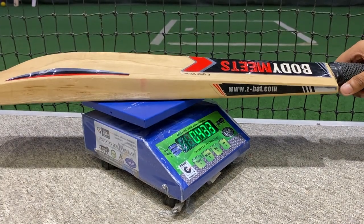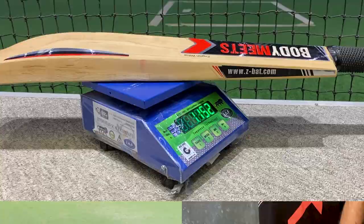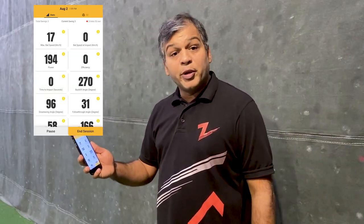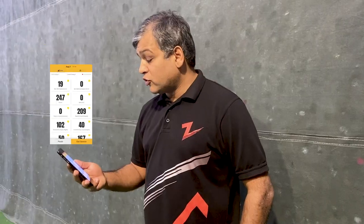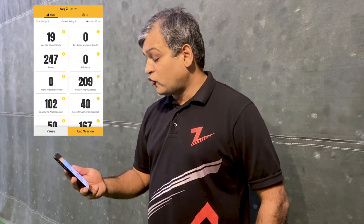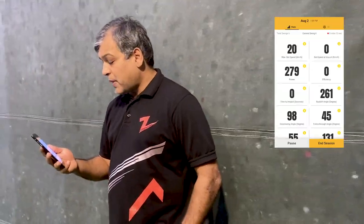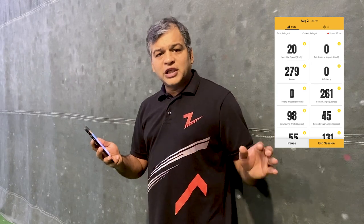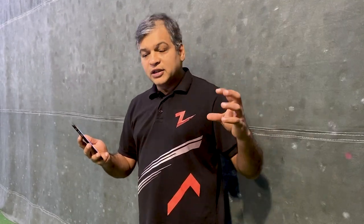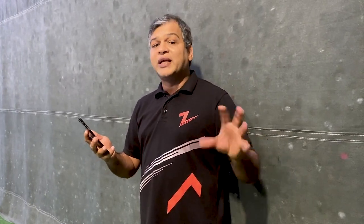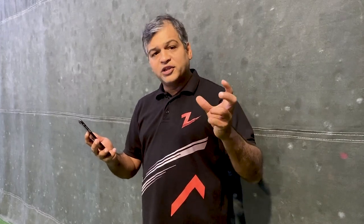He started with a light bat whose weight was approximately 1150 grams. He generated a bat swing of 17 km per hour and the power was 194. Another shot showed a bat swing of 19 km per hour and power of 247, and then 20 km per hour with power of 279. So the range he is able to create is around 20 to 25 km per hour bat swing, generating approximately 280 to 300 power.